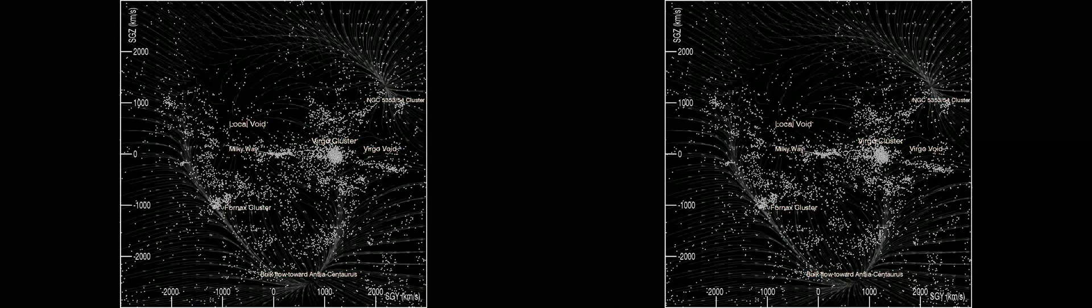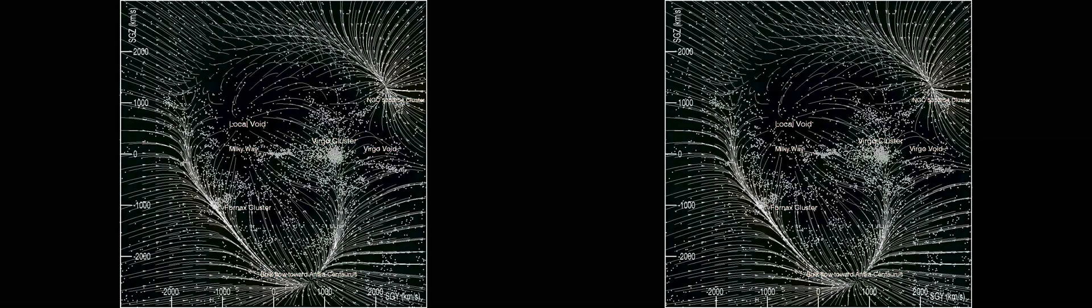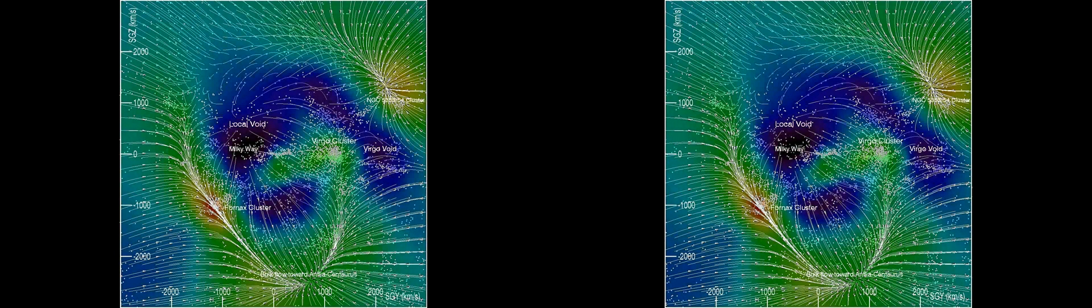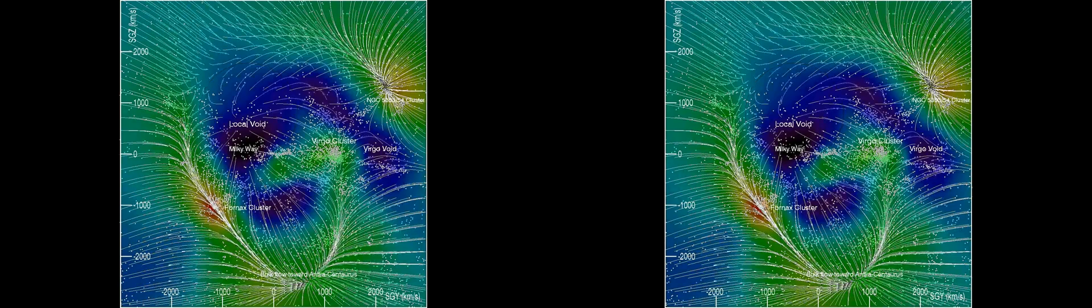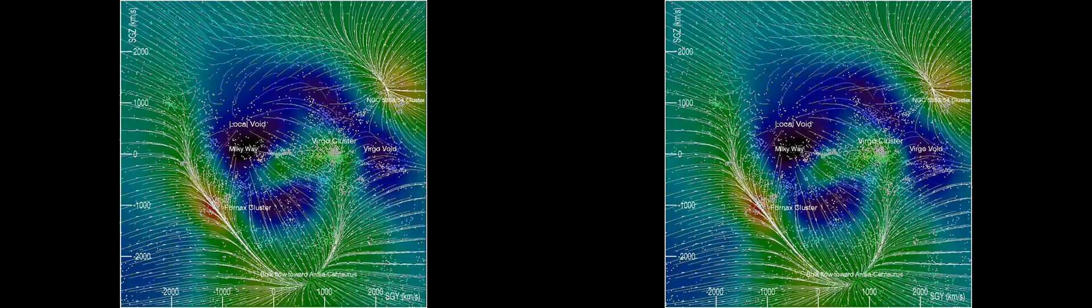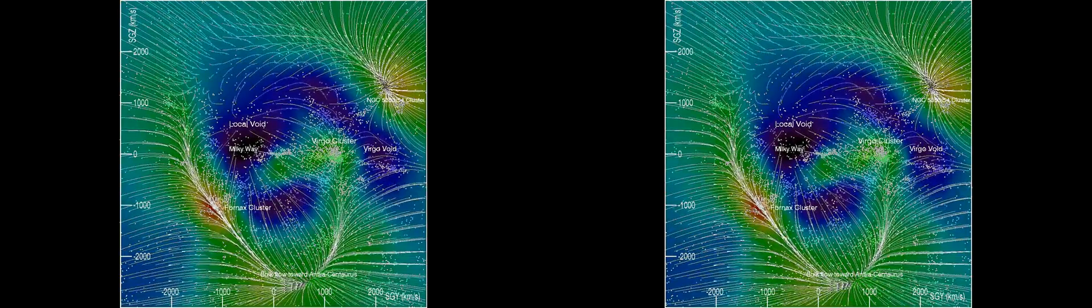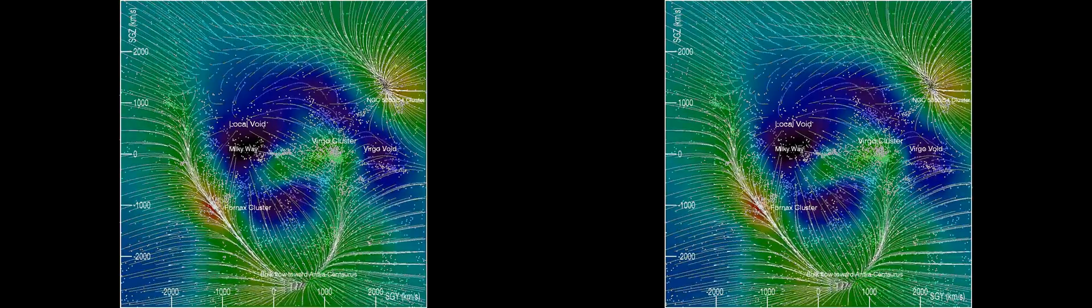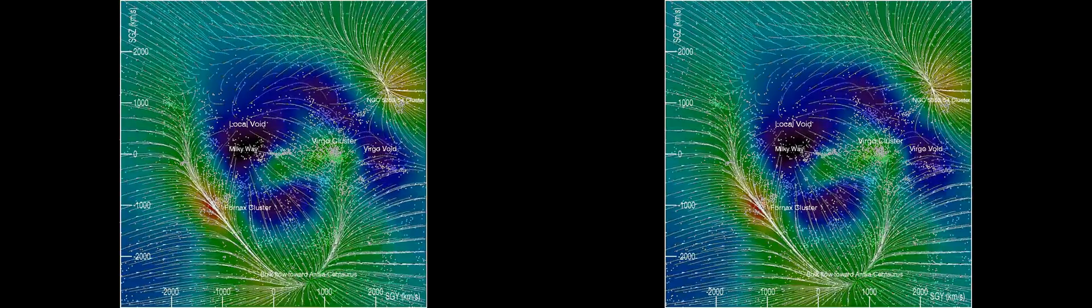Now we see the streamlines of motion and underlying density field. Particularly, note the outflow from voids and the particular prominence of the local void. The present analysis must fail to represent the true extent of the local void, because it extends beyond the domain of distance measurements. The Wiener filter reconstruction returns to mean density, where there are no constraints.